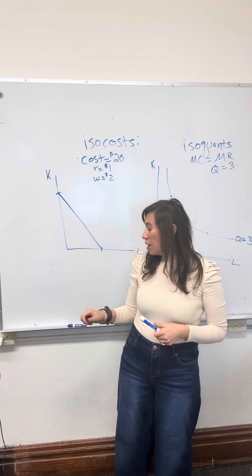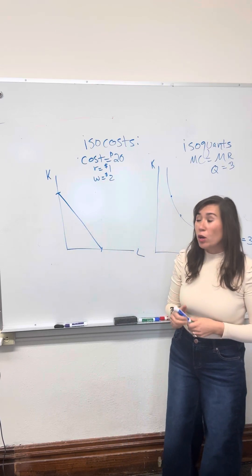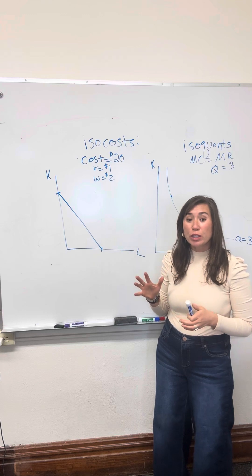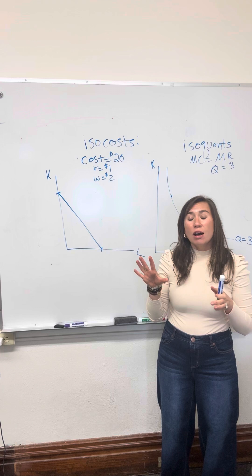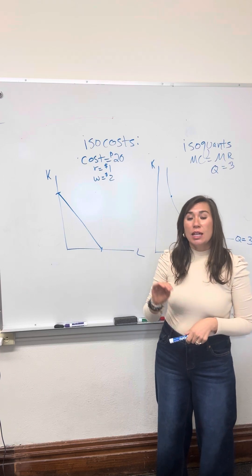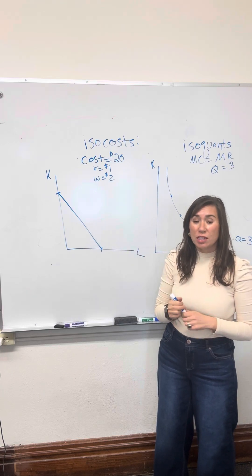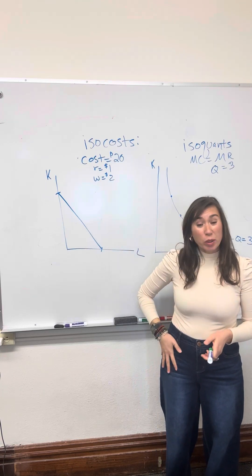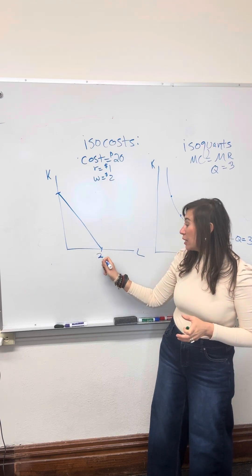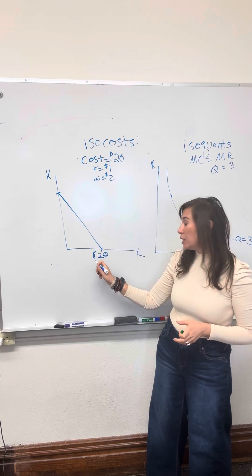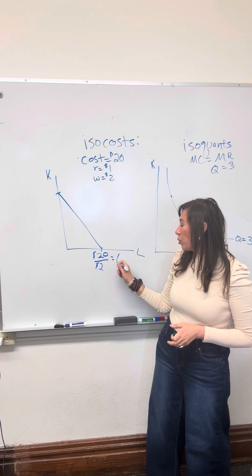Let's start with isocosts. For isocosts, we graph capital and labor on the y and x axes. Then we look at: if we have a certain number of dollars in our pocket, what are all the combinations of capital and labor that we can afford, given the prices of capital and labor in the marketplace? In this scenario, the firm has $20. If they spend all their money on labor hours, they can afford at most 20 divided by the per-hour wage rate of $2, which gives them 10 labor hours.